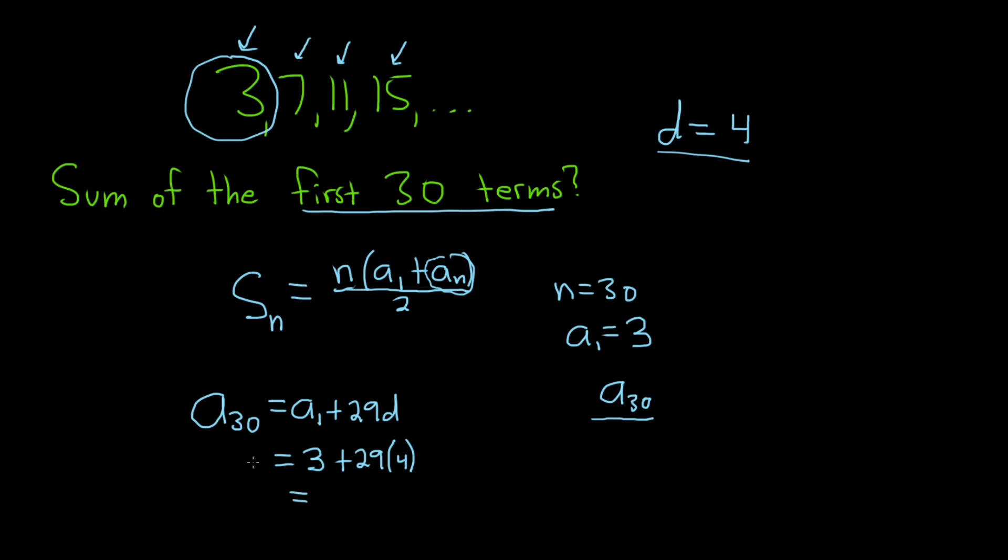So if you put this in your calculator, 3 plus 29 times 4, I got 119, so that would be the 30th term.